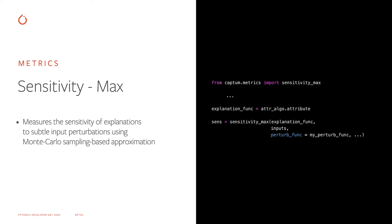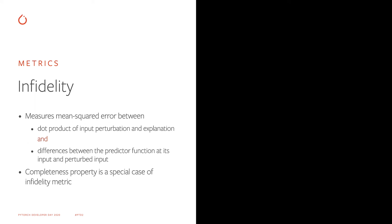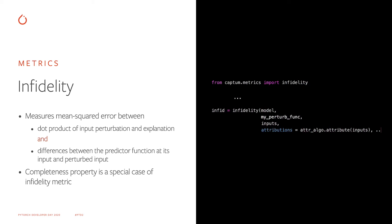The second evaluation metric is called infidelity. Infidelity measures the mean squared error between the dot product of input perturbations and explanations, and the difference between the predictor function at its input and perturbed input. This metric is a generalization of the completeness axiom known for attribution algorithms such as integrated gradients and DeepLIFT. To use the infidelity function, we need a forward function of our model, a perturbation function, the inputs, and the attributions. Attributions can be computed using captum algorithms from captum.attr, or any other external package.